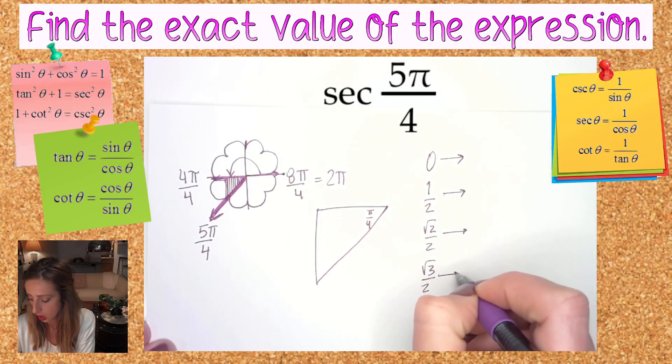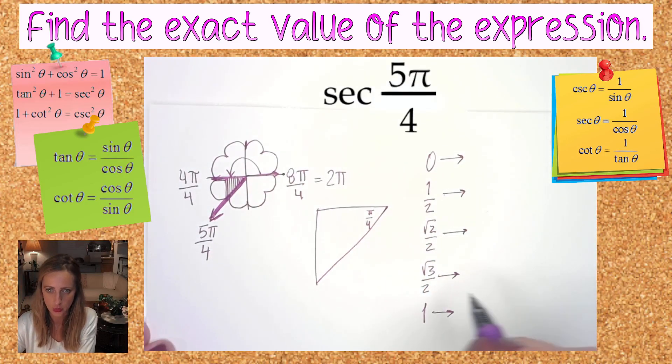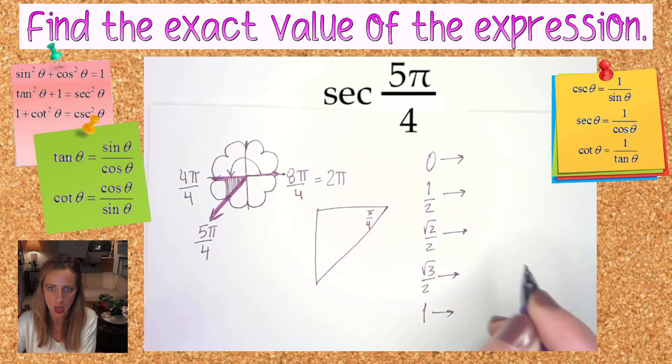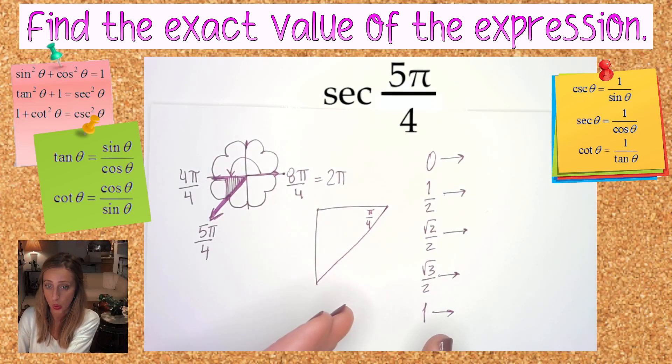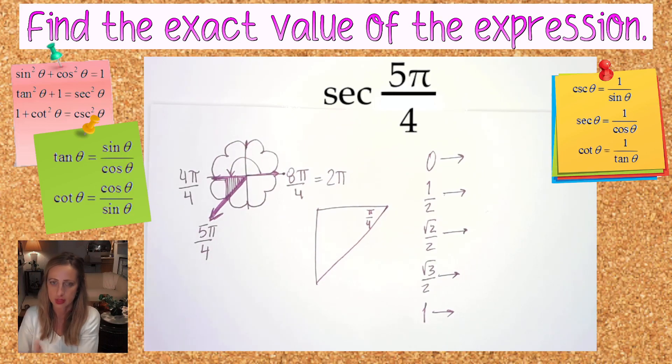Secant and cosecant being their reciprocals have a few possibilities as well. So really you have like a one in five shot, or if you consider the negatives, you have a one in nine shot in guessing an answer for a sine or cosine unit circle question. Similarly, same idea for secant cosecant, just the reciprocals.